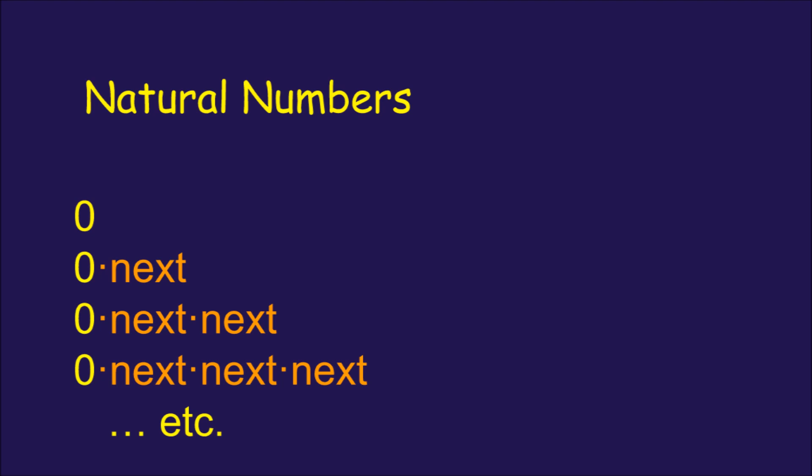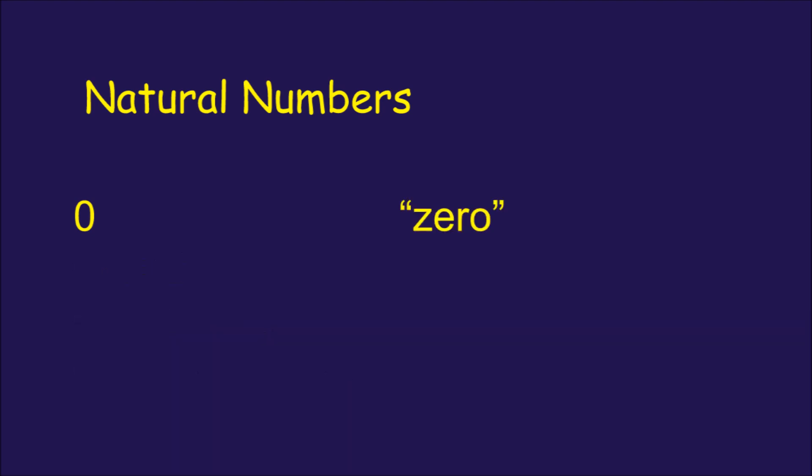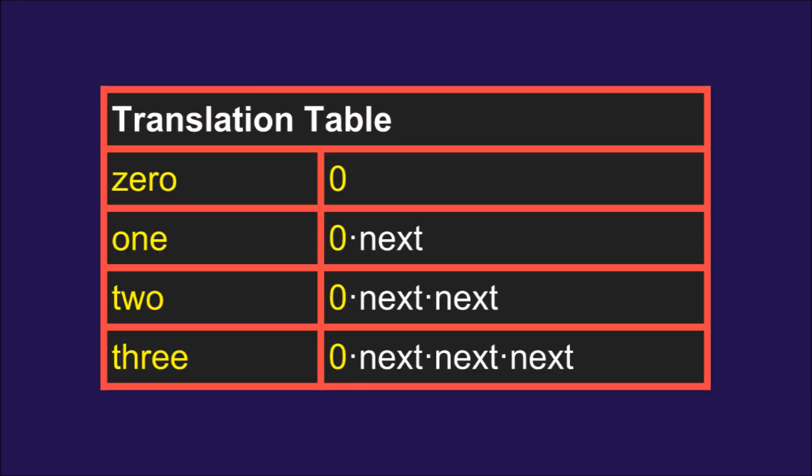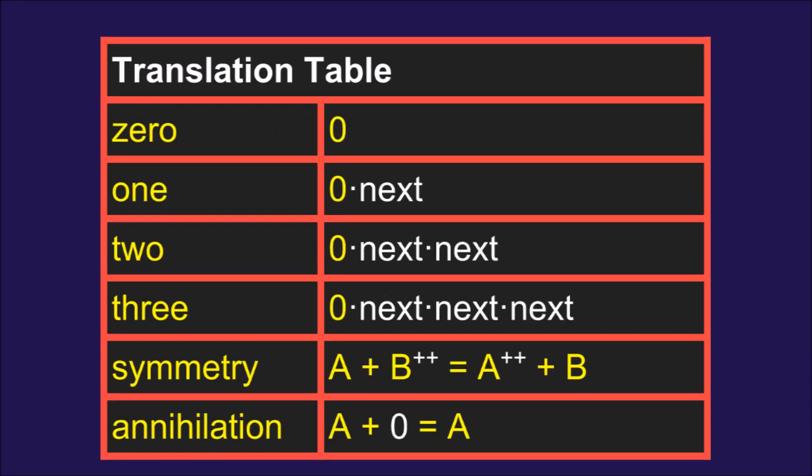So now we're almost done, it turns out to be useful to give a name to some of these chains. 0 equals 0, 0.next is 1, 0.next.next is 1.next, which we'll call 2, and so on. If we make a table of these, and add our two original definitions, the symmetry and annihilation rules, then we're done.